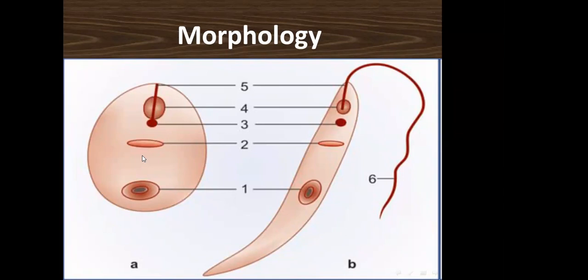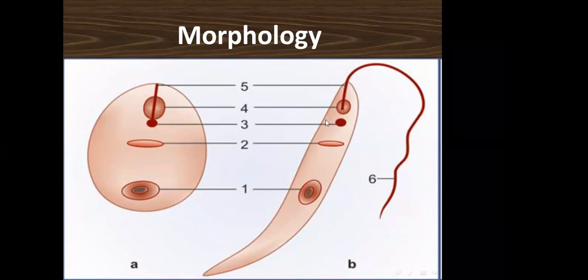For all three Leishmania species, the morphology involves the amastigote and promastigote stages. The amastigote is the diagnostic stage in humans and is obligatory intracellular, targeting macrophages for binary division replication. It is taken up by engulfment as a foreign body. The promastigote is the infective stage delivered from the insect. It has a spindle shape, central nucleus, anterior flagellum, and anterior kinetoplast providing energy for movement.